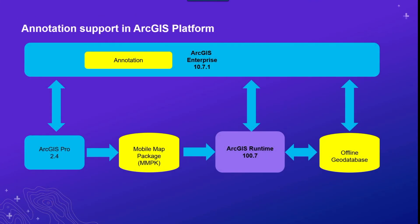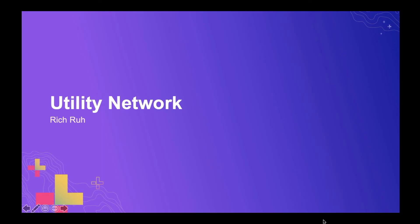Just to complete the picture showing all annotation workflows: ArcGIS Runtime in the middle can read data from mobile map packages exported from ArcGIS Pro, read data directly from an enterprise server via REST endpoints, or read from an offline geodatabase containing editable features and annotation. With that, let's move on — I'll hand back to Rich to talk about the new utility network functionality available in Runtime.